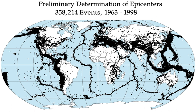Reverse faults, particularly those along convergent plate boundaries, are associated with the most powerful earthquakes — megathrust earthquakes — including almost all of those of magnitude 8 or more. Strike-slip faults, particularly continental transforms, can produce major earthquakes up to about magnitude 8. Earthquakes associated with normal faults are generally less than magnitude 7.